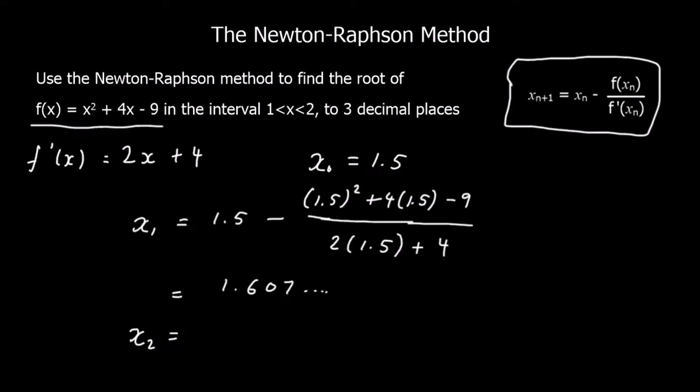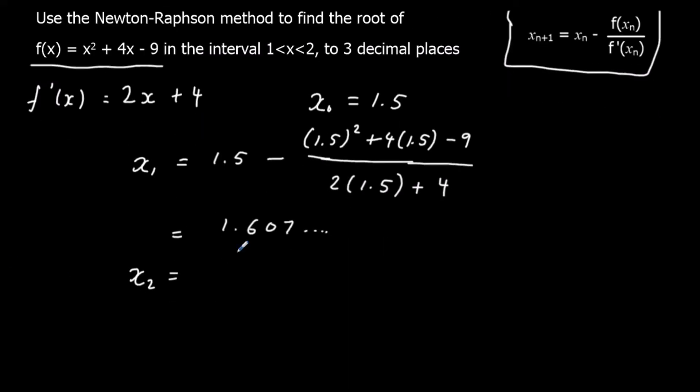To find x₂, I'm going to be typing that answer into my formula. All I've got to do is change the 1.5 to the answer button now. I'm going to use the answer button on the calculator. Changing all the 1.5s into ans, and I'm going to click equals again. x₂ is 1.607 and so on.